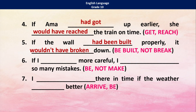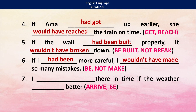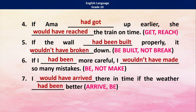Here the 'be' form uses past participle 'been'. 'If I had been more careful, I wouldn't have made so many mistakes' — negative form: would not have made. The last one: 'I would have arrived there in time if the weather had been better.' The 'be' form: had plus past participle of 'be' — 'been'.